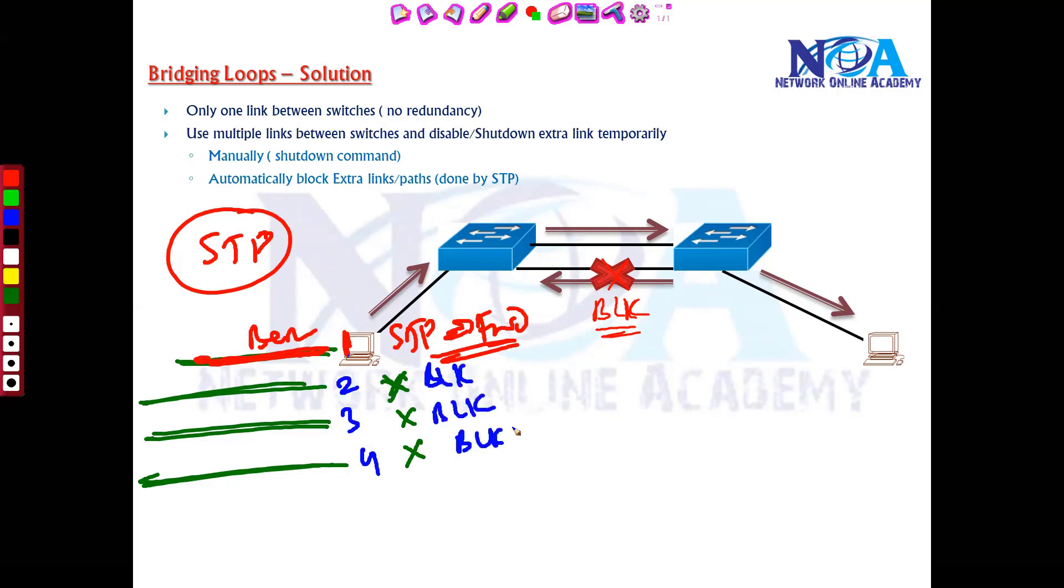Now the blocking state means that it's not going to forward any traffic. So the STP will ensure that any one link is forwarding the traffic, remaining all the routes are blocking temporarily. And let's say due to some reason if this link goes down, one of the link goes down, the best link goes down let's say.